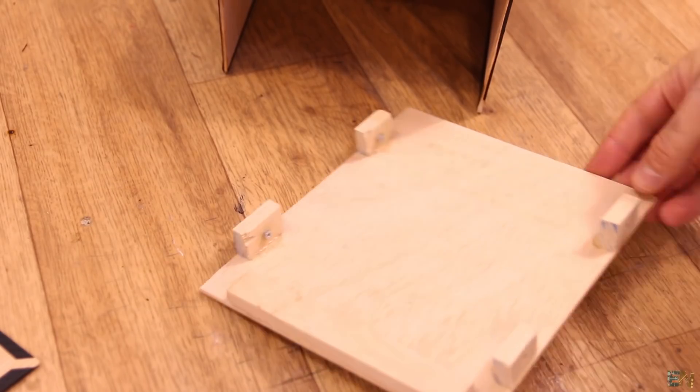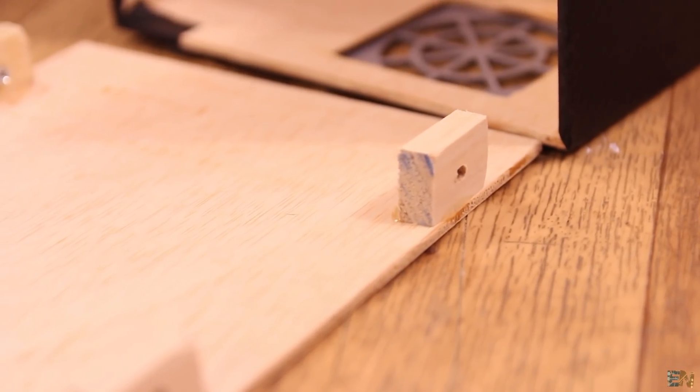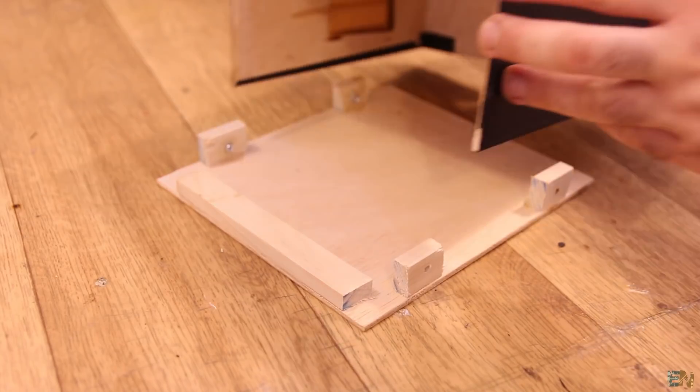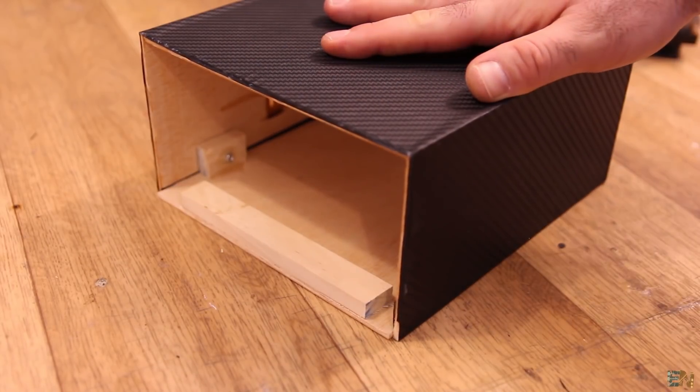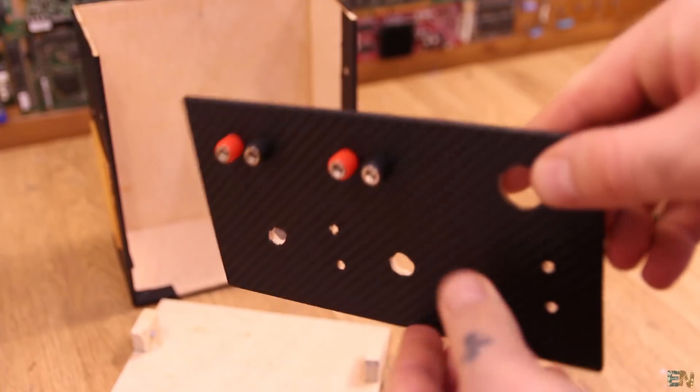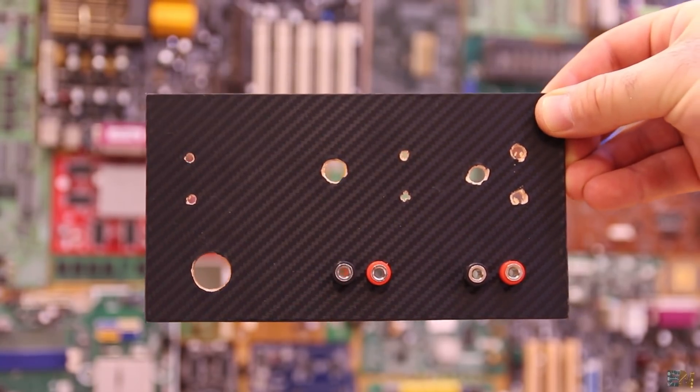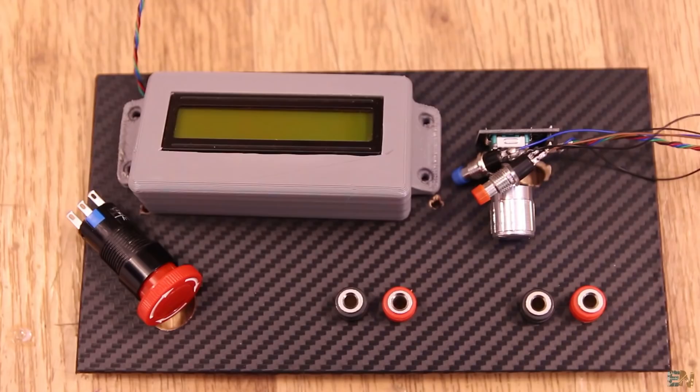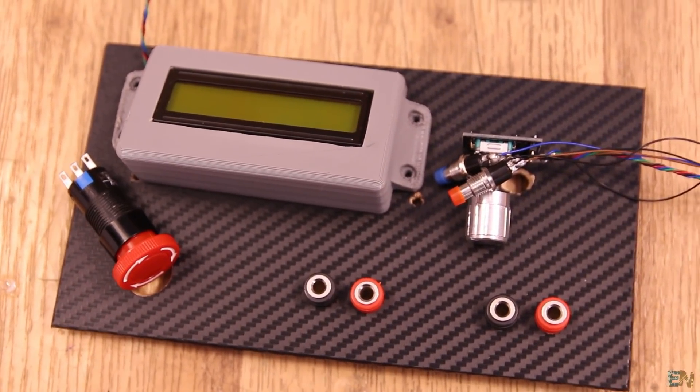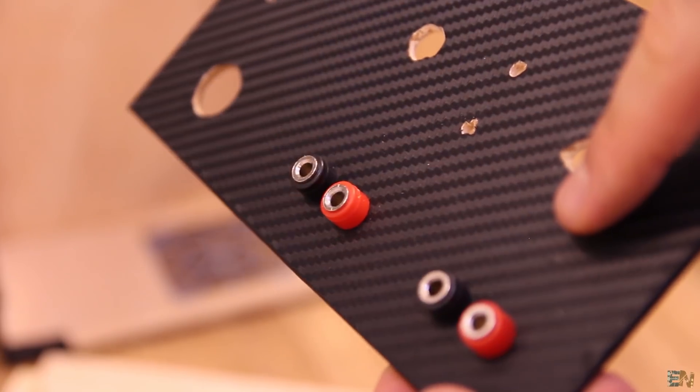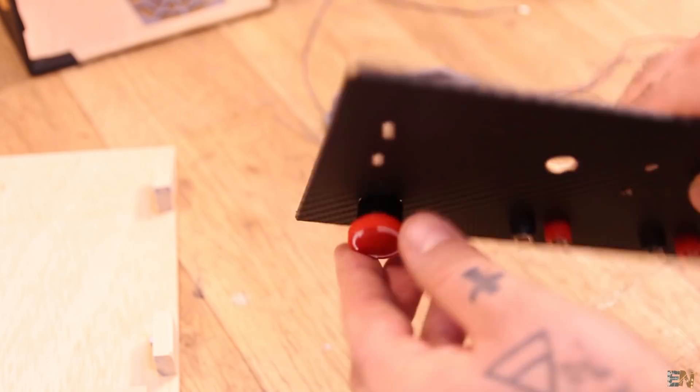For the bottom part, I cut another piece of plywood and I place a few wood blocks in order to add some screws and join together the bottom part with the top part. Then I cut the front part of plywood and I glue the carbon fiber vinyl on top. I measure and make the holes for the banana connectors, the on and off switch, for the encoder, the push buttons and the screen 3D printed part.